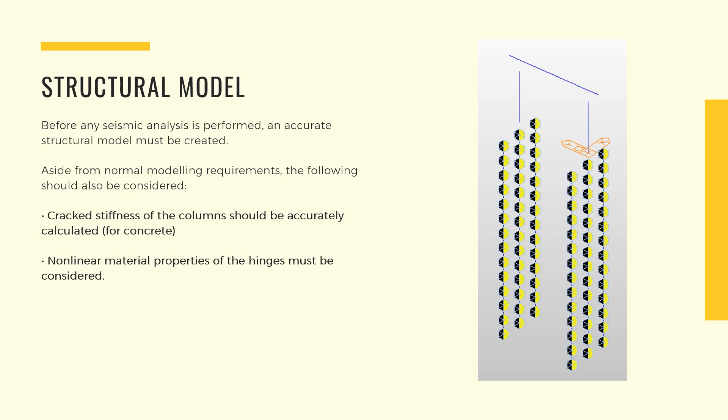Assuming our model has satisfied all other design requirements, some additional items should also be considered. First, cracked stiffness of the columns should be accurately checked. In the force-based method, it is usual to assume that the cracked inertia of the columns is 0.5 of the uncracked section. However, this may cause overestimation of the demand displacement, so it is preferred that we calculate the actual cracked inertia of our columns. Next, we consider the non-linear properties of the hinges such as material strength, concrete confinement, and other factors. Midas General Section Designer can help us with this input.